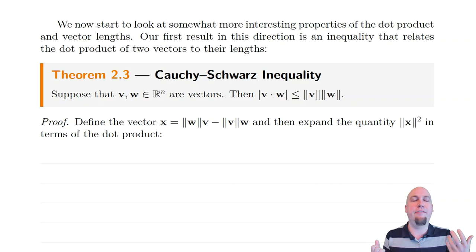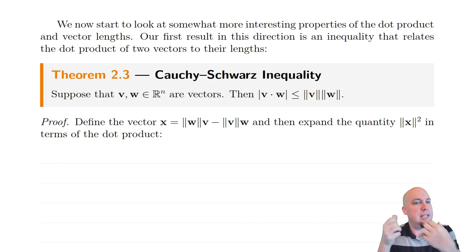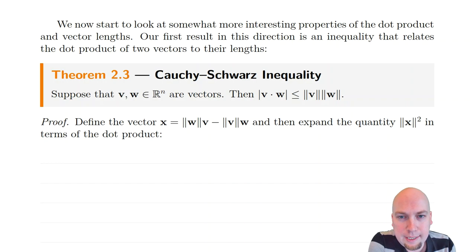It tells you how dot products and lengths interact. Suppose you've got any vectors in any dimensional space — what happens is the absolute value of the dot product is always less than or equal to the product of the lengths of those vectors. For example, you cannot possibly find any vectors that have a dot product of eight and individual norms of each one, because eight is not less than one times one. So it bounds what types of dot products you can get based on the lengths of those vectors.